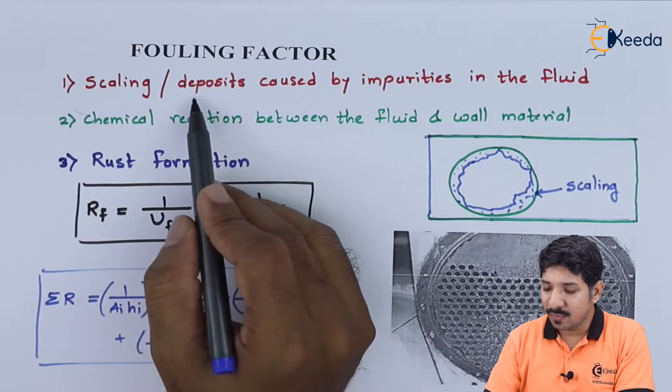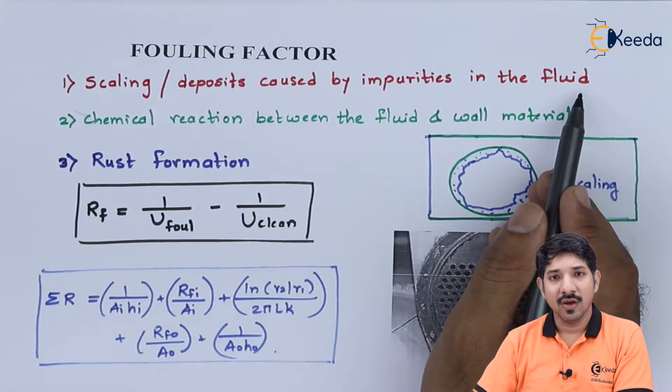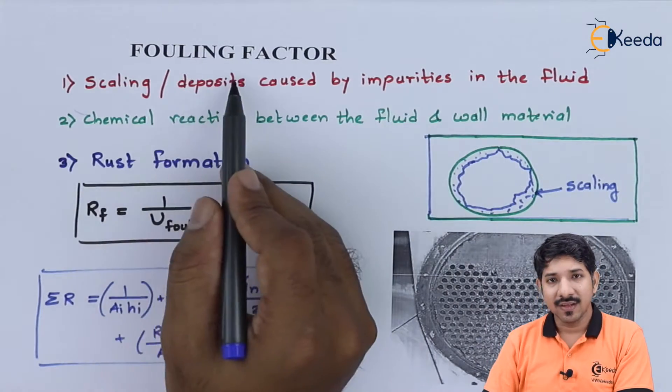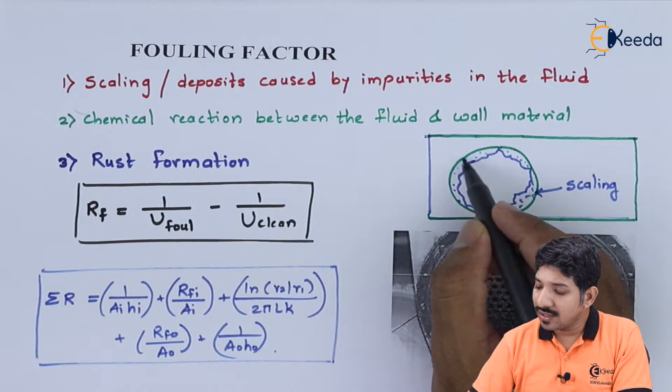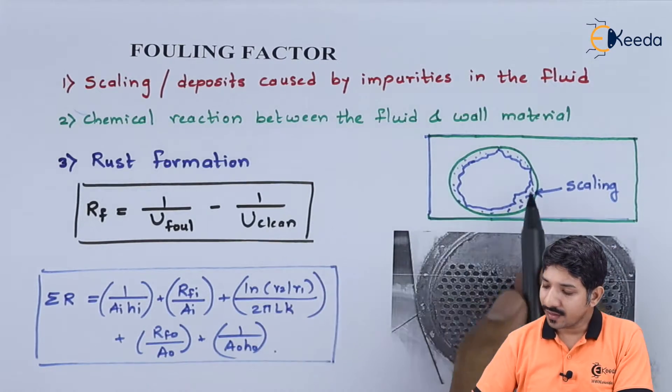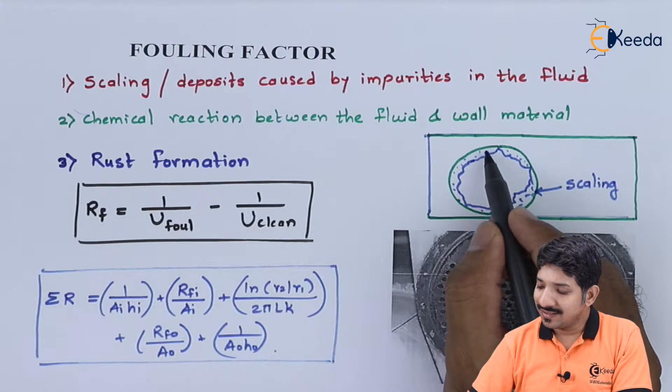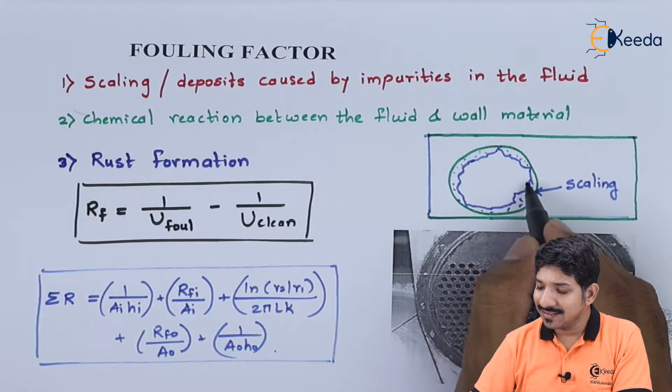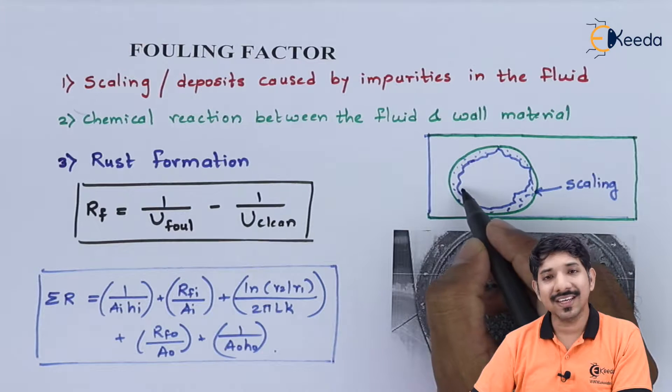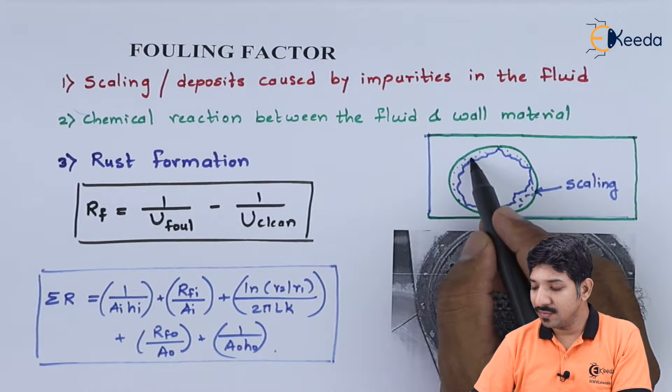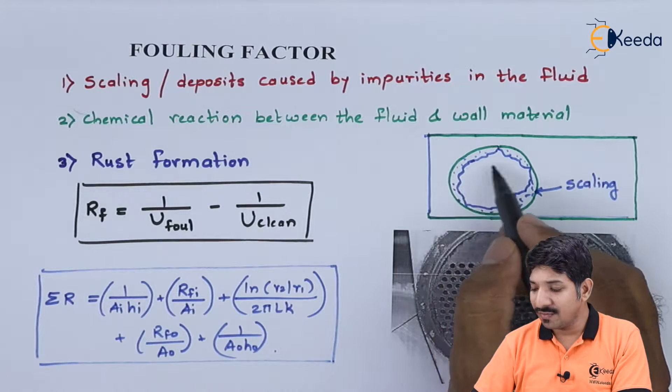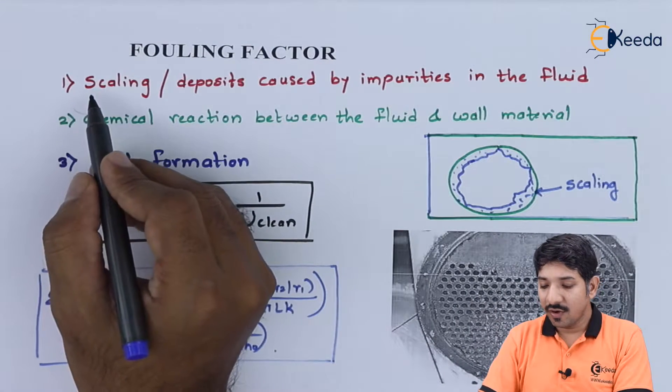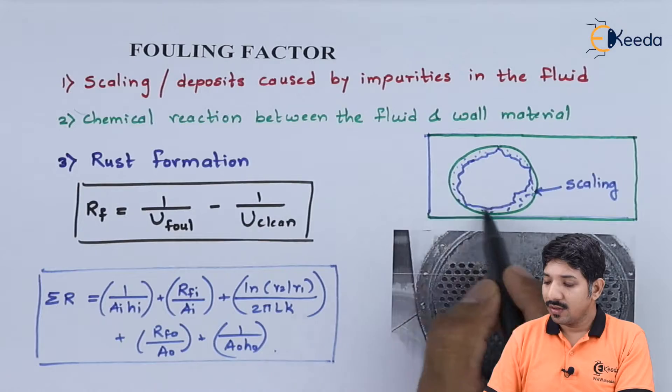There are three main reasons. One is obviously the scaling—that is deposition caused by impurities in the fluid. The fluid we are using may not be pure enough, so the depositions may get impinged on the inside surface of the pipe itself. As we can see from this diagram, the green line indicates the inside of the pipe, and the blue line indicates the reduction in cross-section area.